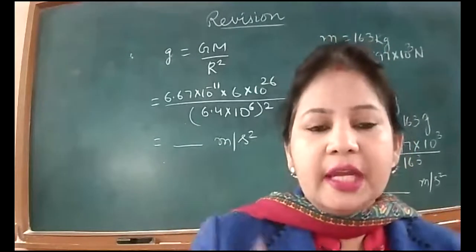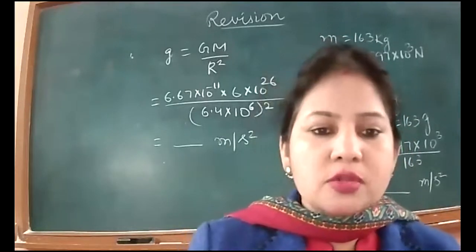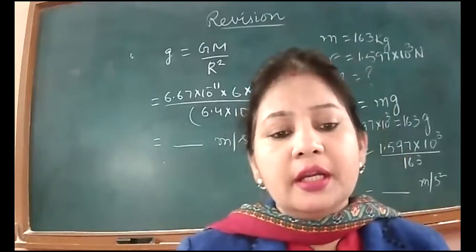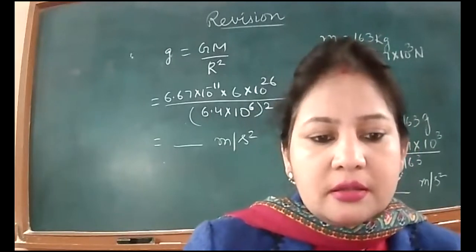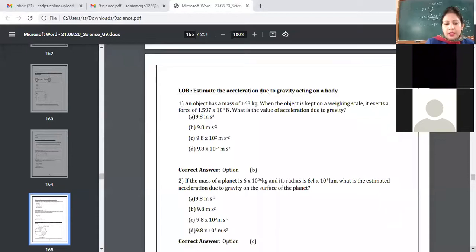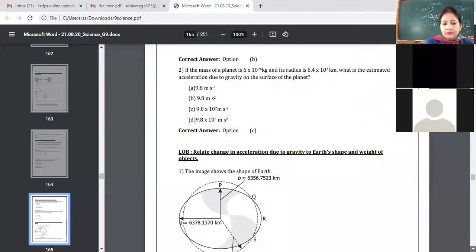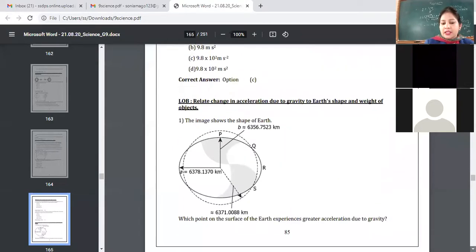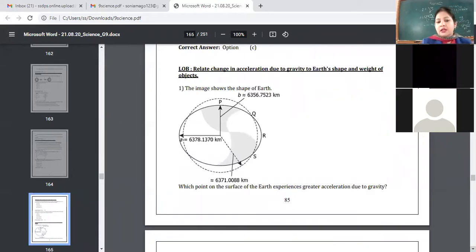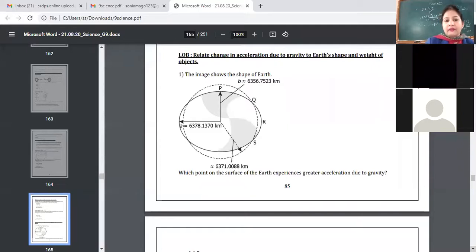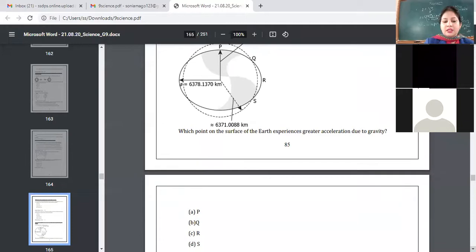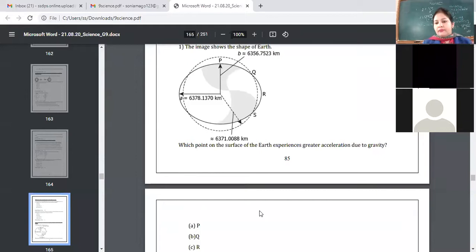When we take 6 into 10 raised to power 24, the answer is 9.8. There are two zeros extra in 10 raised to power 24, so our answer is 9.8 into 10 raised to power 2. So C option or D option, that is answer. So our answer is option C or option D. So our answer is 10 raised to power 24, right? Yes, why not D? Because unit is wrong. Meter second square is given and in D also they have given wrong unit.